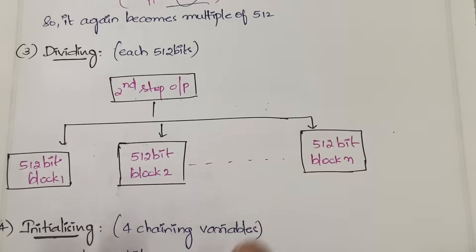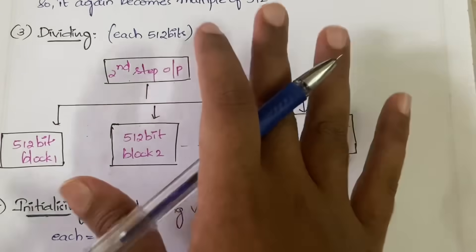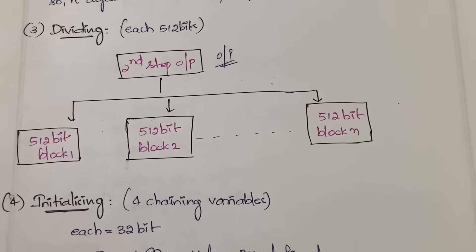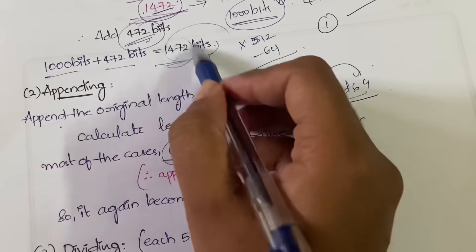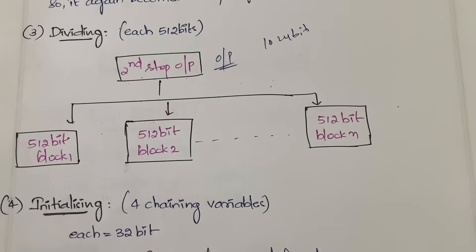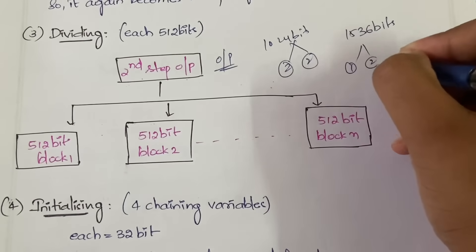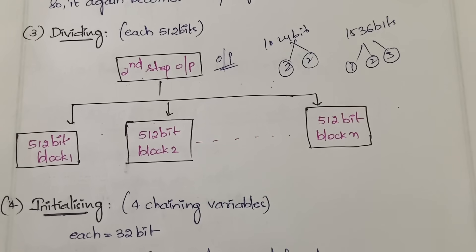In the third step, you divide the entire message into a number of 512-bit sub-blocks. Whatever output you get after appending the 64 bits in step two, you divide that into 512-bit blocks. For example, if you have 1024 bits you divide into two blocks; if you have 1536 bits you divide into three 512-bit blocks.